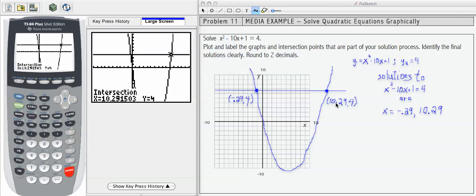So when I write out my solutions, x equals negative 0.29 is the left side solution, comma 10.29 is the right side. This is not an ordered pair. This is a list of two x values.